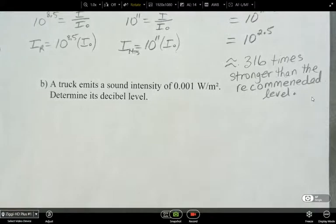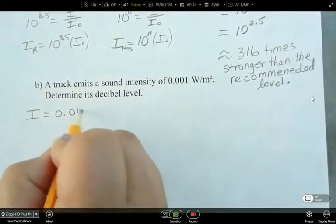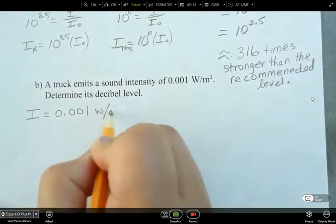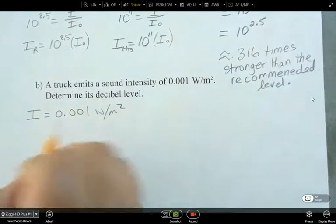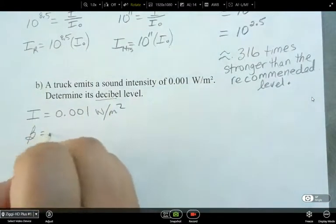So the last one here. A truck emits a sound intensity of 0.001 watts per meter squared. Determine its decibel level. So here we're given intensity, 0.001 watts per meter squared. And we're looking for the decibel level. So we're looking for beta.